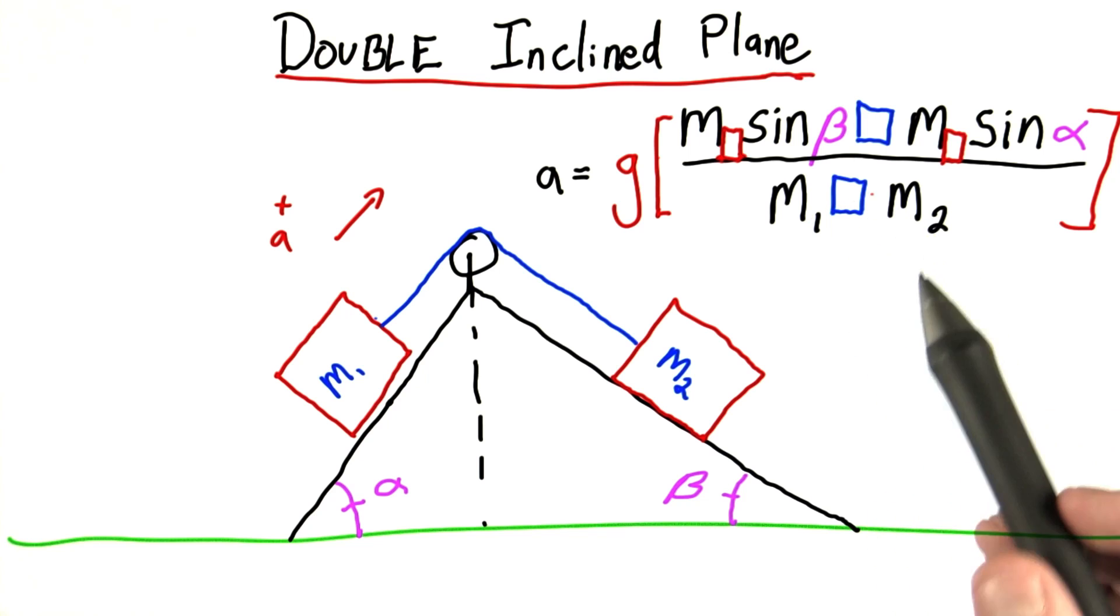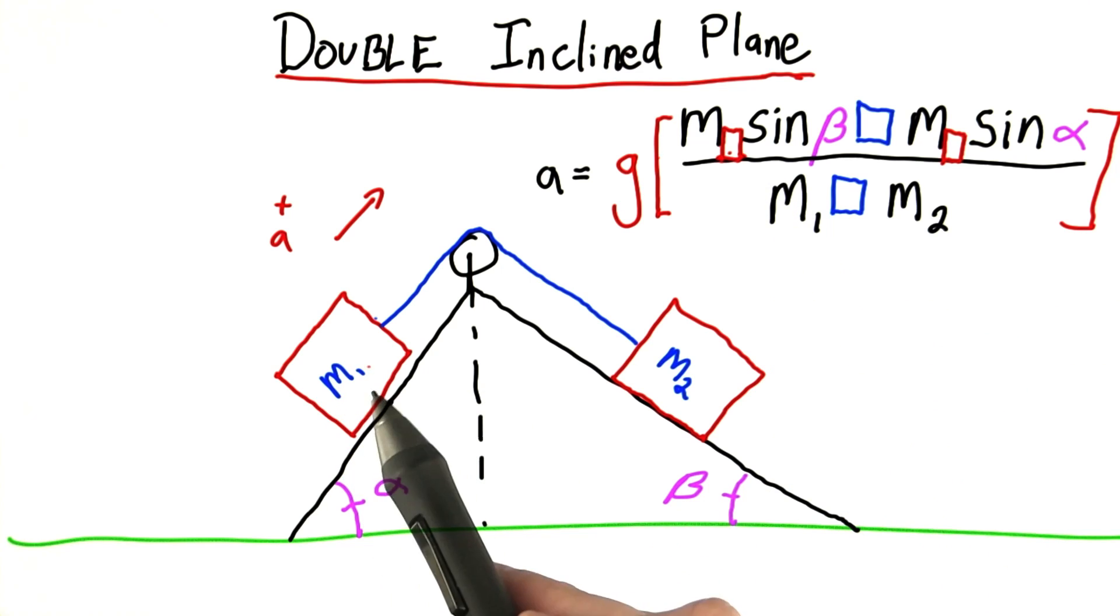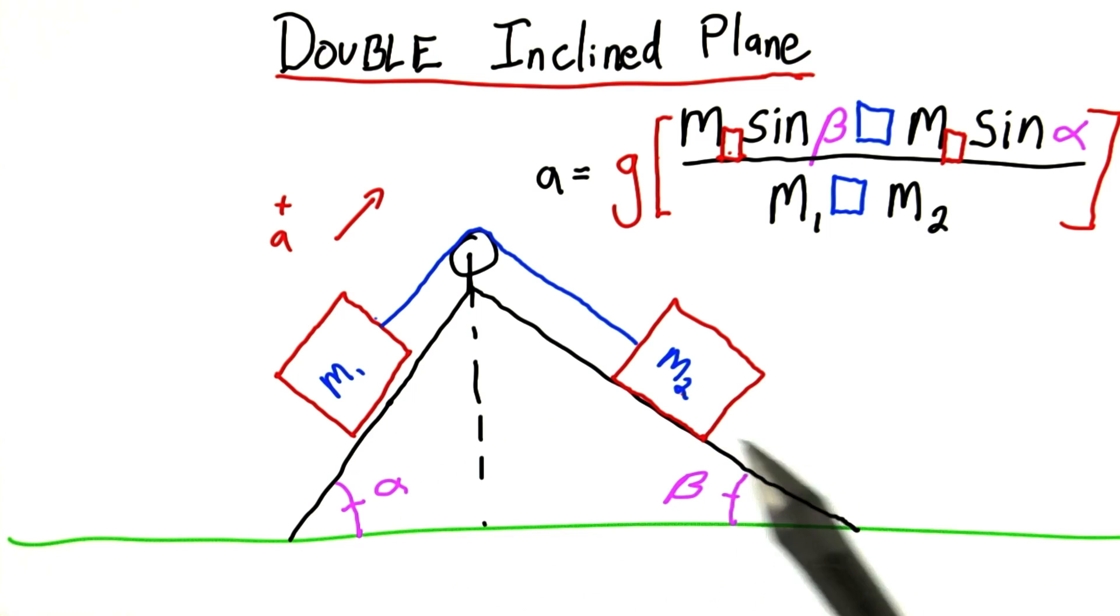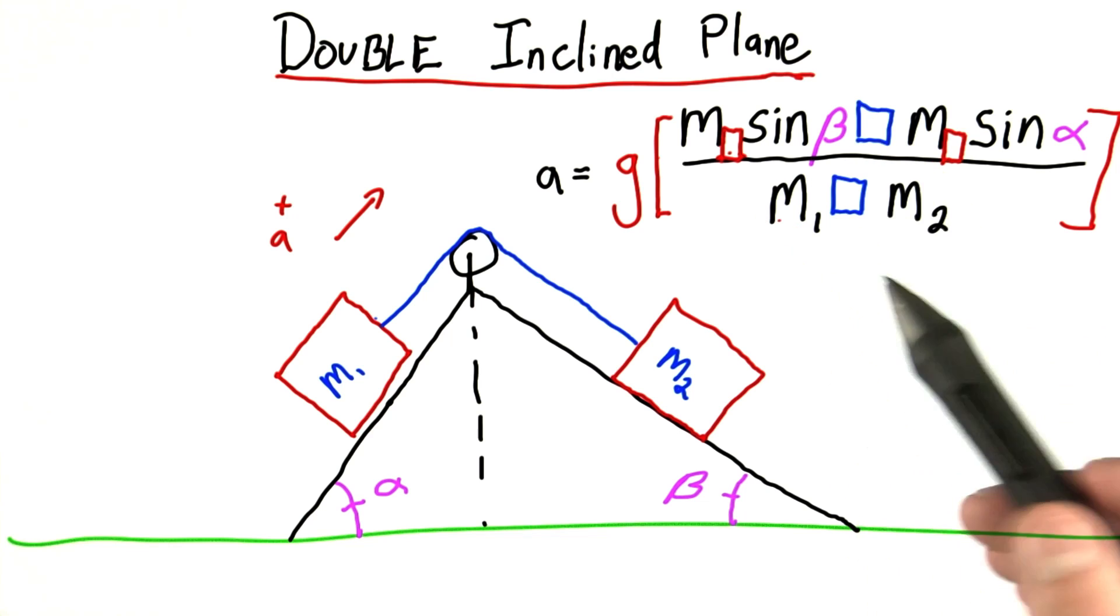Now, you could just solve this equation. You could do f equals ma for both of the blocks and get an answer. Or you could try using your intuition. See what makes sense. Think of limiting cases. What happens when m1 gets really big or m2 gets really big? What happens if beta is really small or alpha is really small? Thinking this way should be able, in theory, to tell you exactly what symbols go in the blue and red boxes. Good luck.